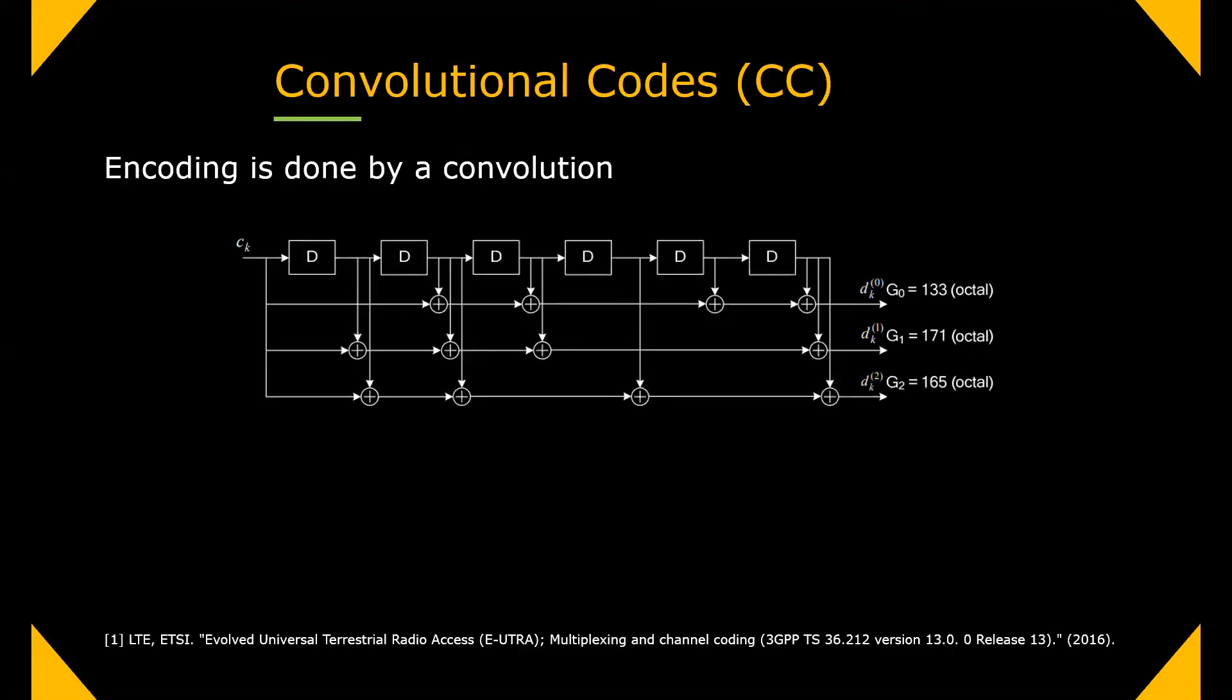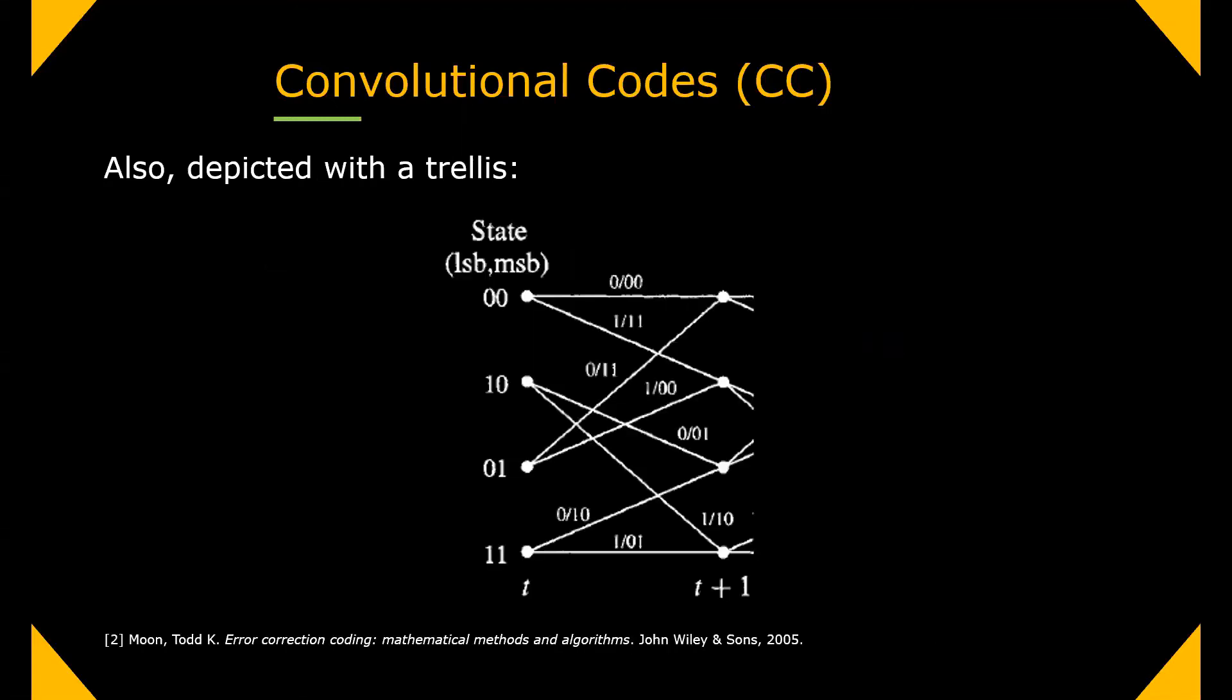However, when we consider the time domain, this representation is not very convenient because the registers need to be updated every step with new values. So to capture temporal transition, one would rather work with the trellis depicted here. An encoder with two shift registers has four states. Each state has two transition options based on the input bit. Now we can concatenate multiple such sections sequentially, based on the length of the info word, to depict its entire encoding.